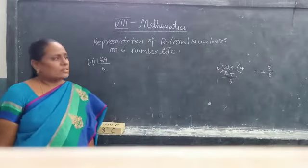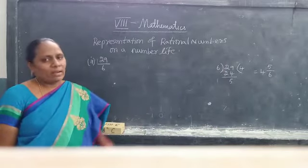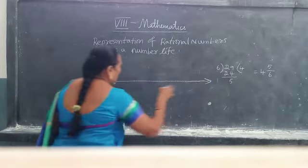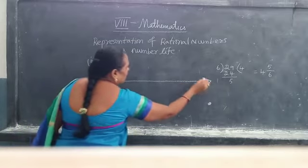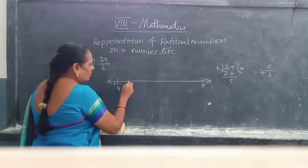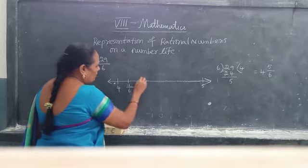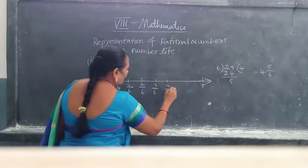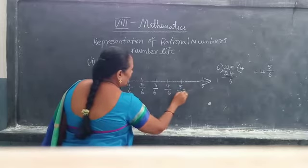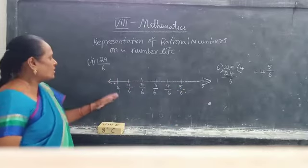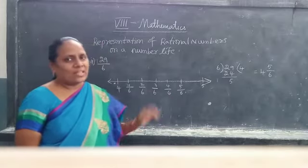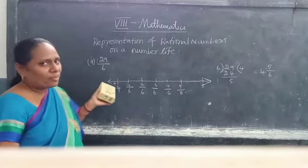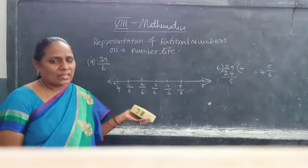Therefore, 29 by 6 lies between 4 and 5. So how do we represent this on the number line? Take 4 here and 5 here. The fractional part you got is 5 by 6, so divide the interval into sixths: 1 by 6, 2 by 6, 3 by 6, 4 by 6, 5 by 6. Therefore this point equals 4 and 5 by 6, which equals 29 by 6. All improper fractions must be represented like this — first change them into a mixed fraction.